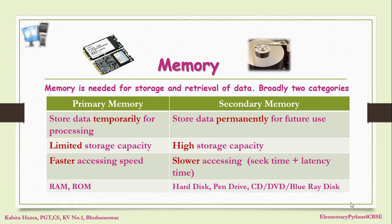The access time is the time required to locate data in the corresponding track and then in the sector. We will see how a hard disk is organized. Different types of primary memory are RAM and ROM. Different types of secondary memory are hard disk, CD, DVD, pen drive, etc.